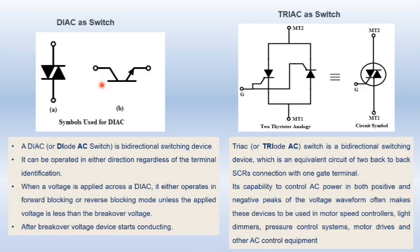Next, we have a DIAC as a switch. DIAC is a diode AC switch. It is a bi-directional switching device and can be operated in either direction, regardless of the terminal identification. It does not have an anode and cathode. When a voltage is applied across a DIAC, it either operates in the forward blocking or reverse blocking mode unless the applied voltage exceeds the breakdown voltage. But once the breakdown occurs, it will start conducting and work as an ON switch.